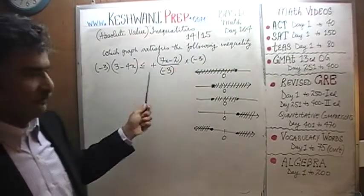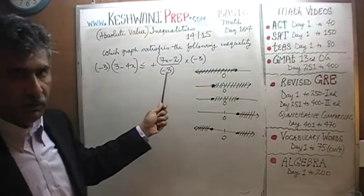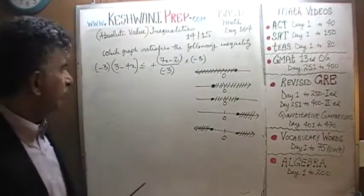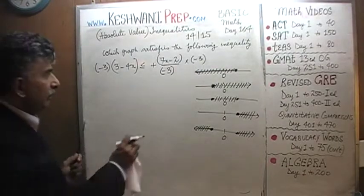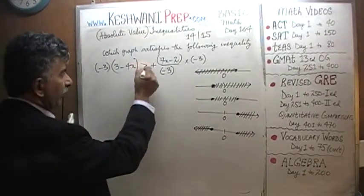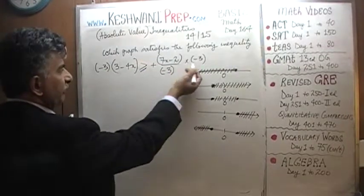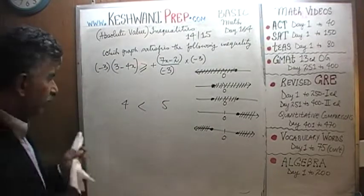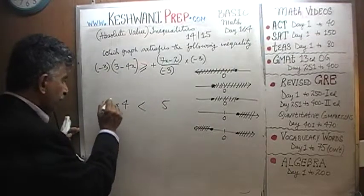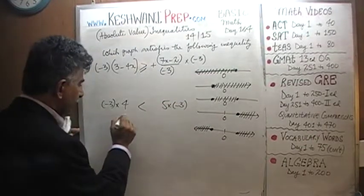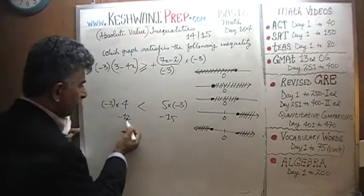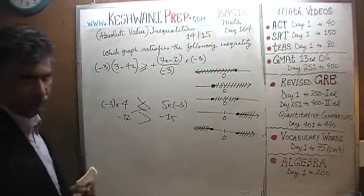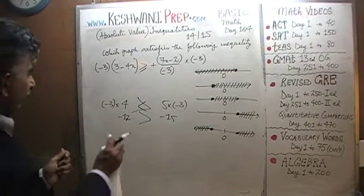As we covered in earlier videos — the 12th and 13th lessons — when we multiply or divide an inequality by a negative number, we must switch the direction of the inequality. This less-than sign becomes greater-than. For example: 4 is less than 5, but multiply both sides by a negative number and negative 12 is greater than negative 15. So that sign switch is done here.